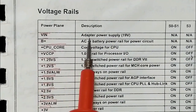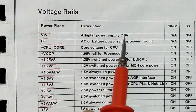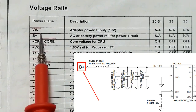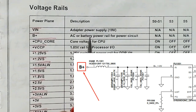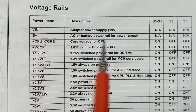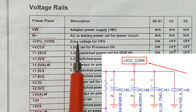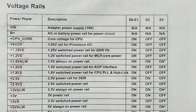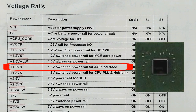We have the V, which means adapter power supply — 90 volts; it could be 20 volts but usually 90 volts. B+ in the schematic means the AC or battery power rail for the power circuit. Plus CPU core means the core voltage for the CPU or the processor. 1.5 volts is the switched power rail for the AGP interface, so this power is for the graphic cards.